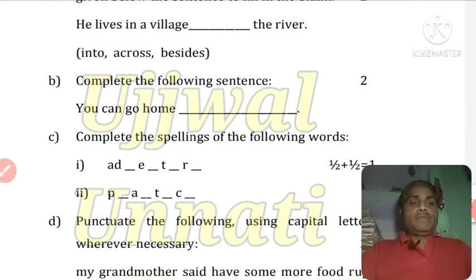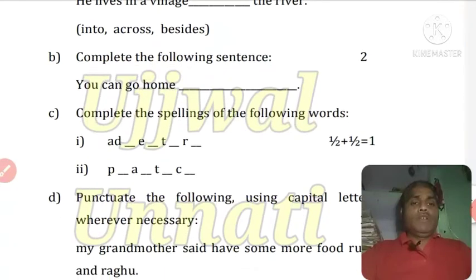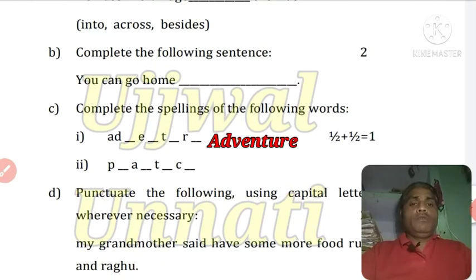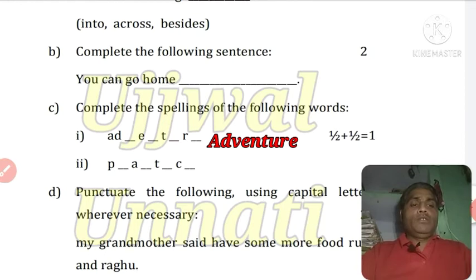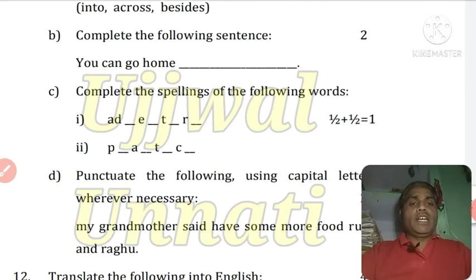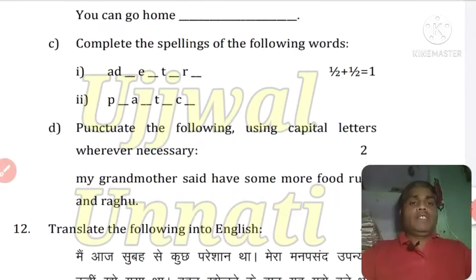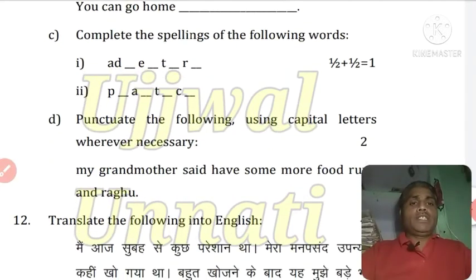Next: Complete the spelling of the following words. First word: Adventure — A-D-V-E-N-T-U-R-E. Adventure means जोखिम, risk. Second word: Practice — P-R-A-C-T-I-C-E. Practice means अभ्यास। So the two words are Adventure and Practice.